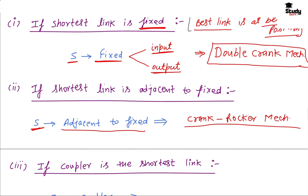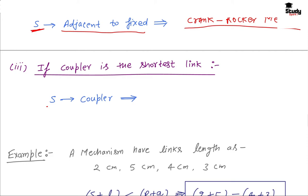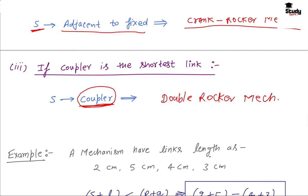Case 3: If the coupler is the shortest link. It is possible that the smallest link is the coupler. Since the shortest link rotates wherever it is placed, in this case the coupler will rotate 360°, but both the input link and output link will only oscillate. We obtain a double rocker mechanism.